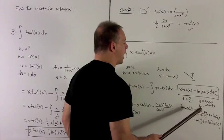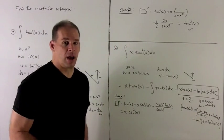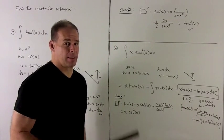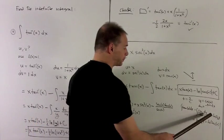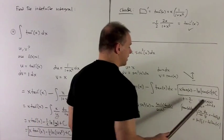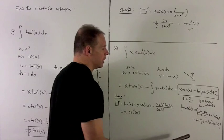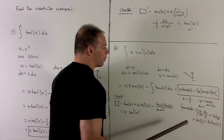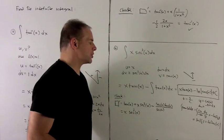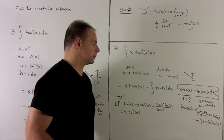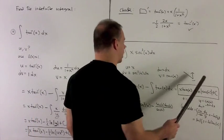Antiderivative of dy over y is just natural log absolute value of y. Bringing the minus sign to the inside as an exponent turns that into absolute value of one over y. And now one over cosine is just equal to secant. So that's how I get this piece here.